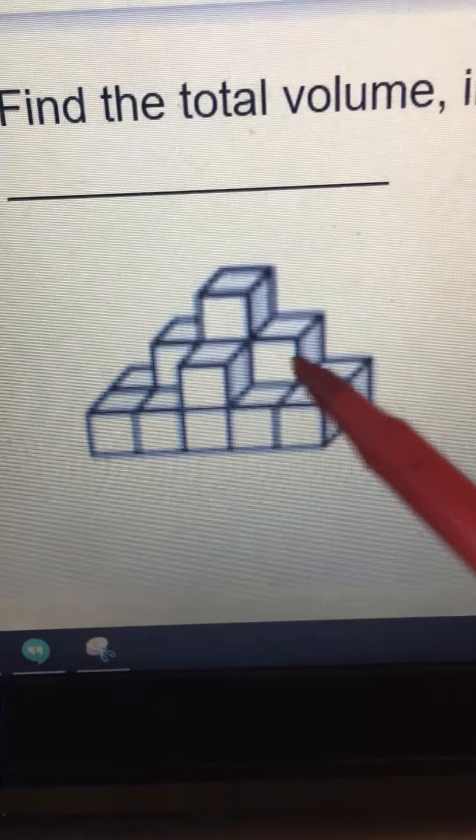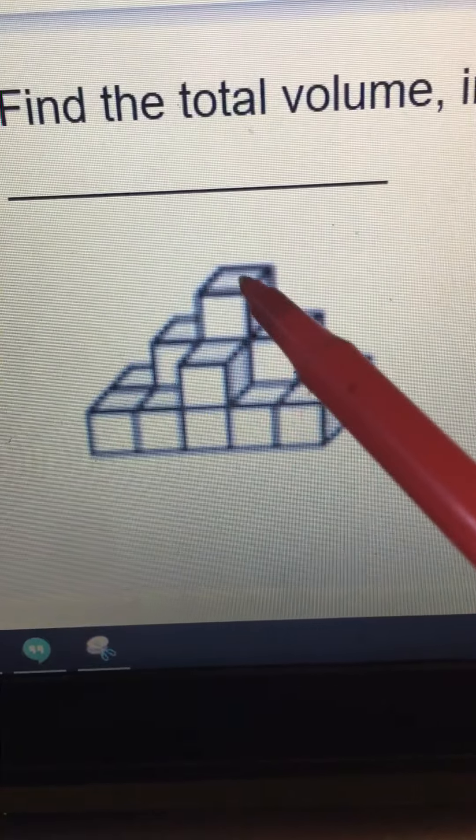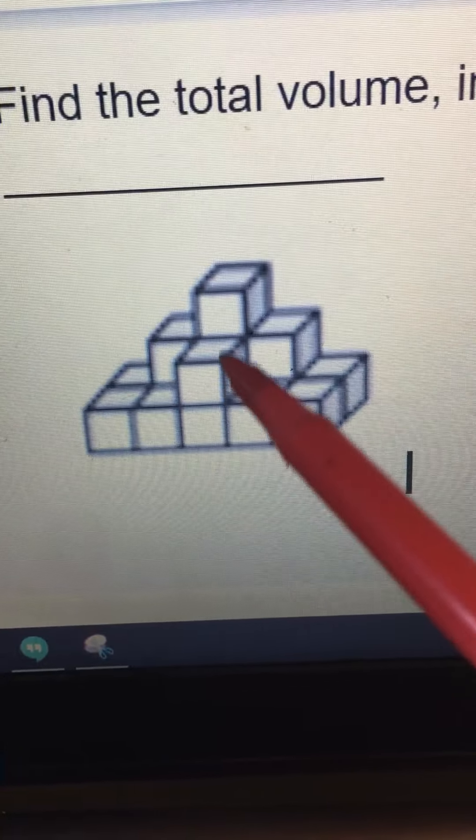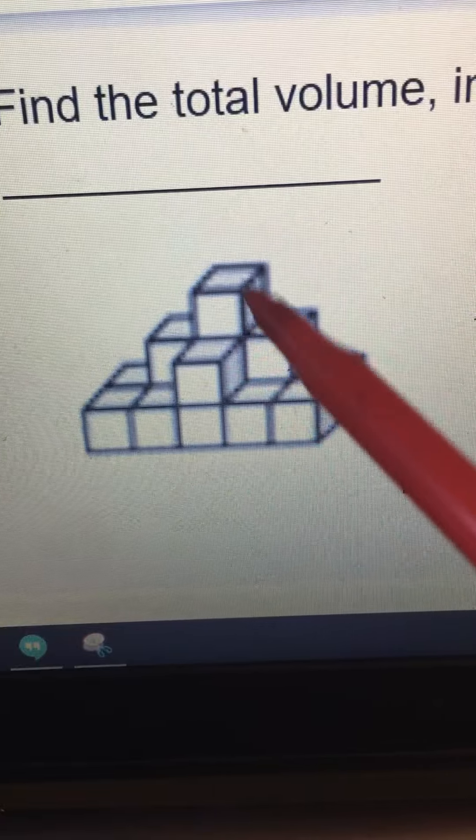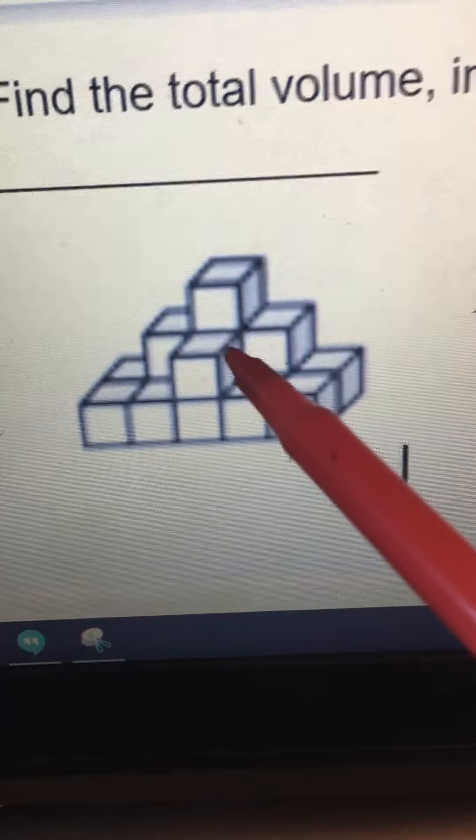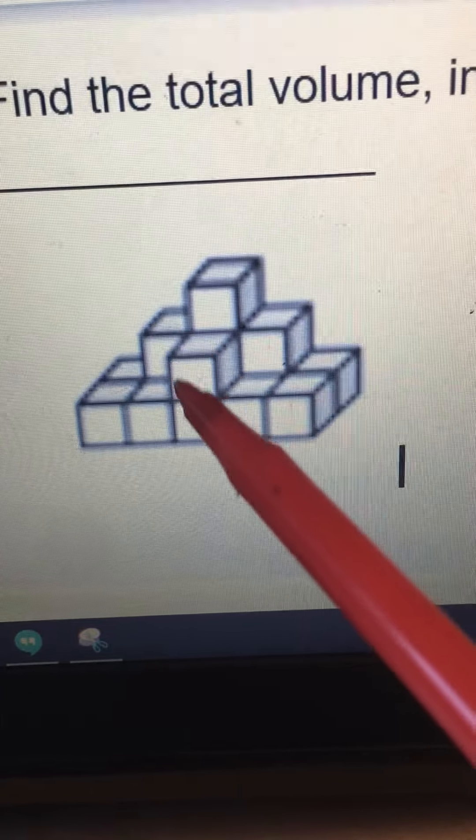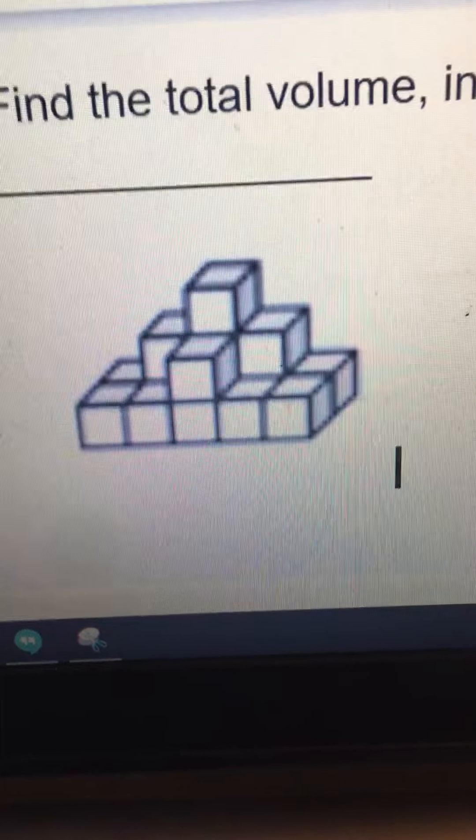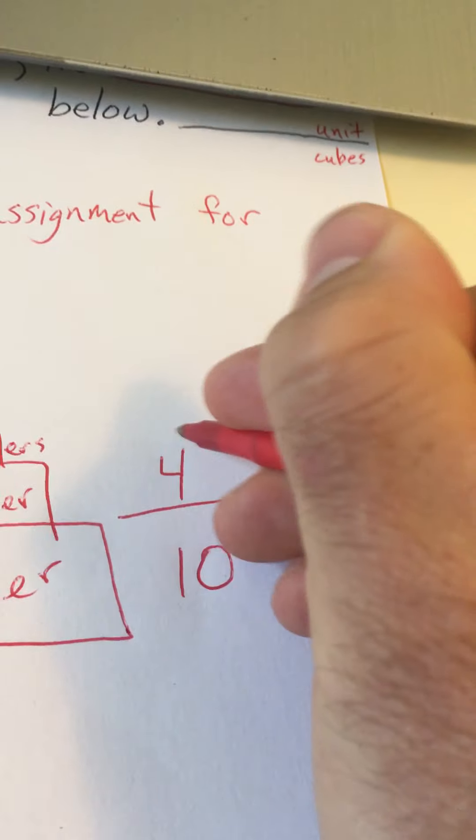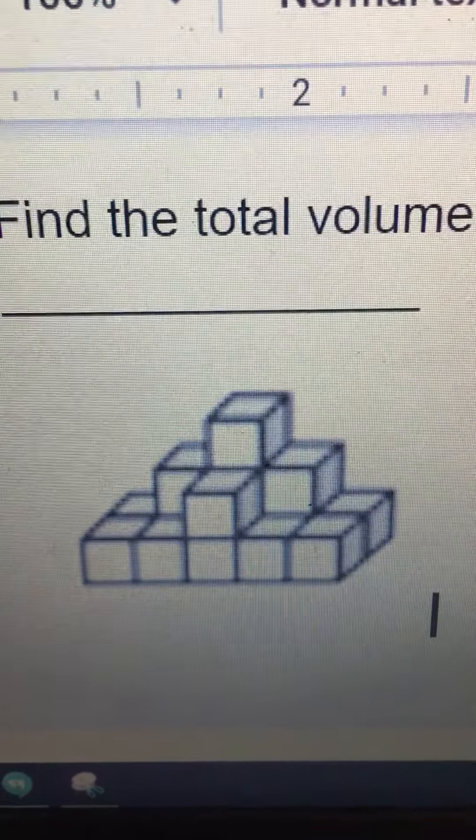Now the second layer has one, two, three, and then there's one hidden below this one behind that one, right? Because this one is—it's not floating up there, right? It's sitting on one that's underneath it. So the second layer is one, two, three, and then the fourth one is hidden. So the second layer has four. And then the top layer just has one.